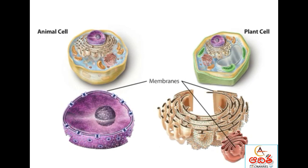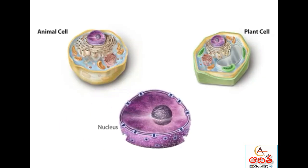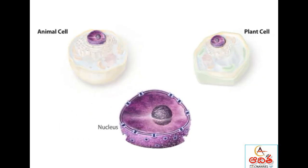The defining feature of eukaryotic cells is an organelle called the nucleus. The nucleus contains the cell's DNA, the stored genetic instructions of each cell, and for this reason is the control center of the cell. Important reactions for interpreting the genetic instructions occur in the nucleus.